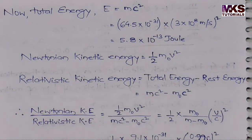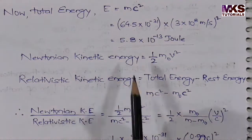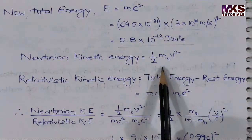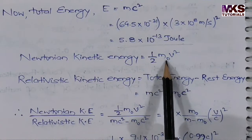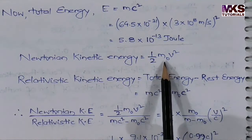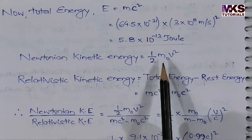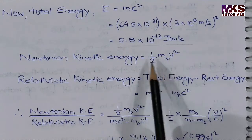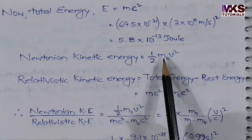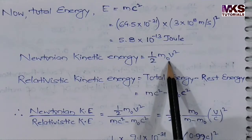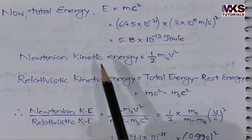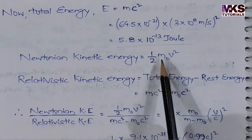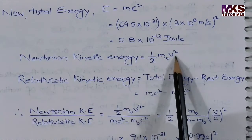Next, for the Newtonian kinetic energy. The Newtonian kinetic energy is half mv², but since we use the rest mass here, it becomes KE_Newtonian = ½ m₀v².